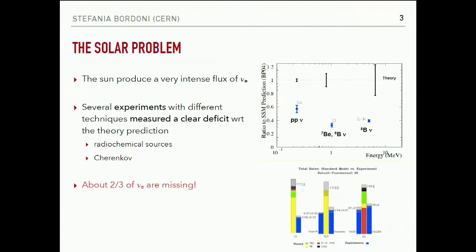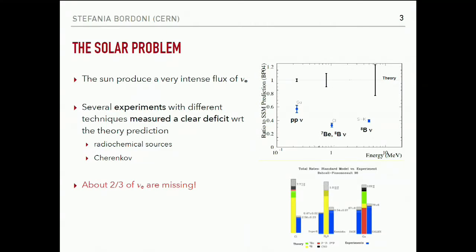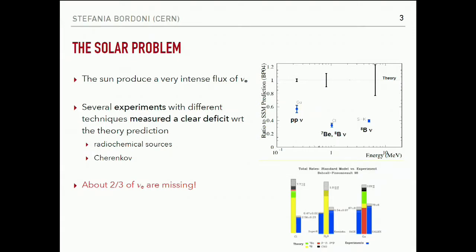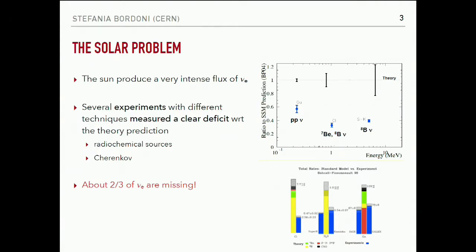Starting with the milestones that enabled the discovery of oscillations, we begin with the so-called solar problem. Some experiments started to look at the neutrinos coming from the Sun. They had predictions from the standard solar model about the flux they should receive, and when they started to measure those neutrinos using different processes, different energy ranges, and different techniques, what they were observing was a clear deficit with respect to expectation. More or less two-thirds of the electron neutrinos they were expecting were missing.